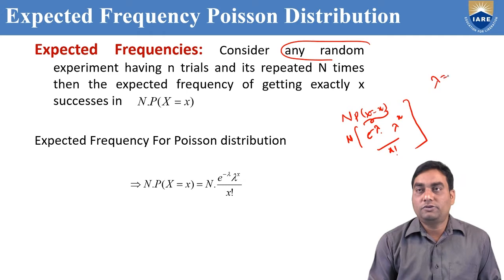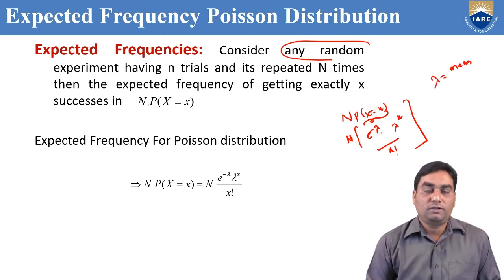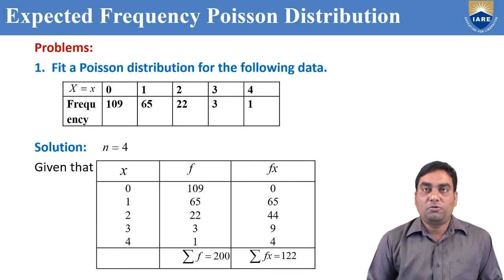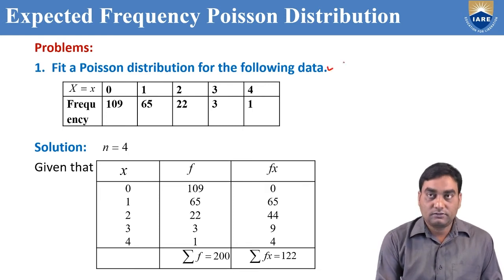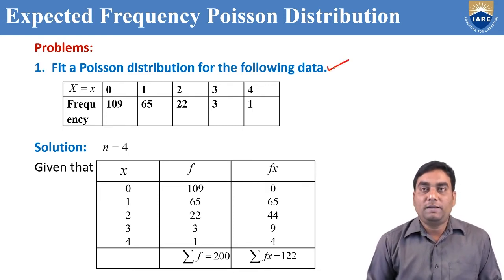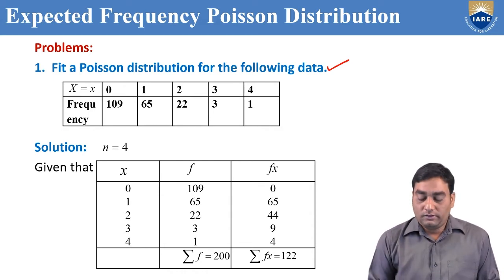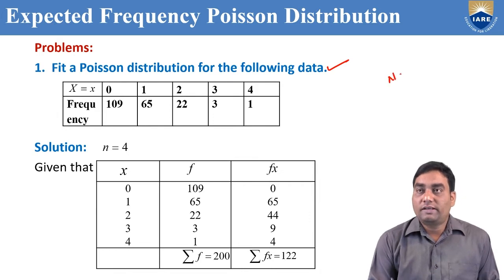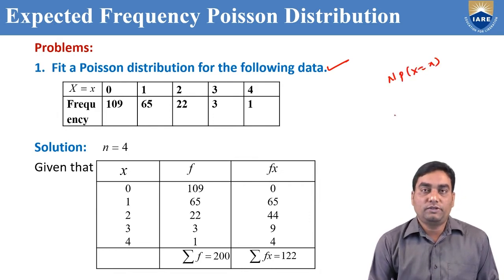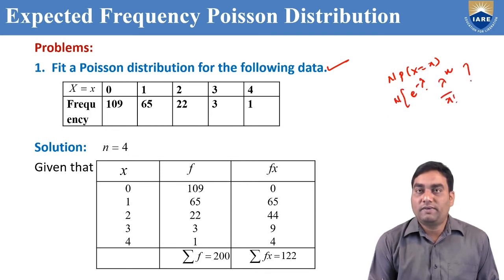Where lambda equals the mean of the Poisson Distribution. The expected frequency formula becomes N · e^(−λ) · λ^x / x!. This is the first problem on expected frequency of Poisson Distribution. Fitting a Poisson Distribution means finding the expected frequency using this formula, for the given x values.